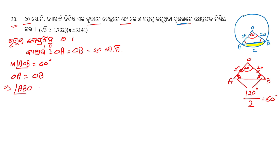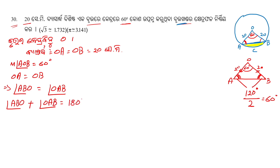We label the points A, B, and O. So the angle AOB is 180 degrees minus 60 degrees, which gives us 120 degrees.